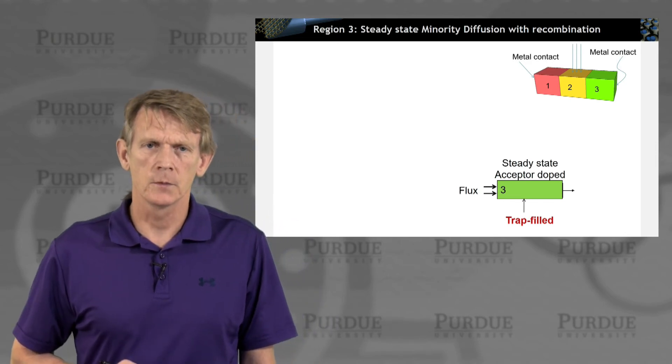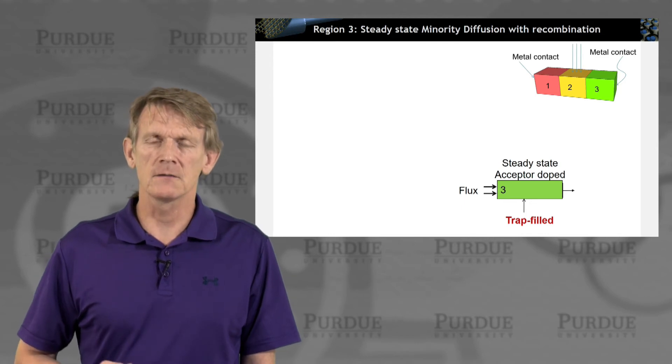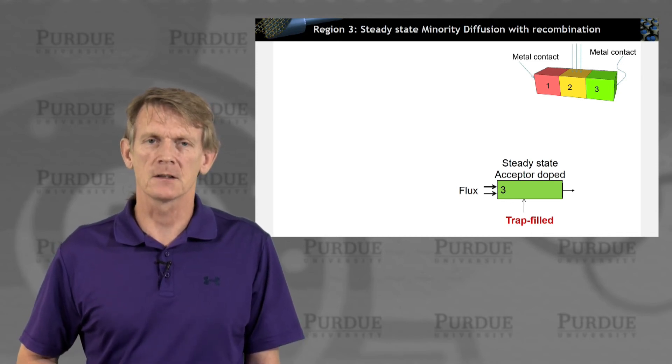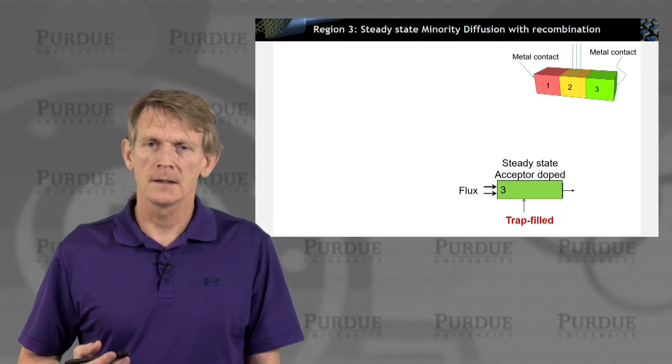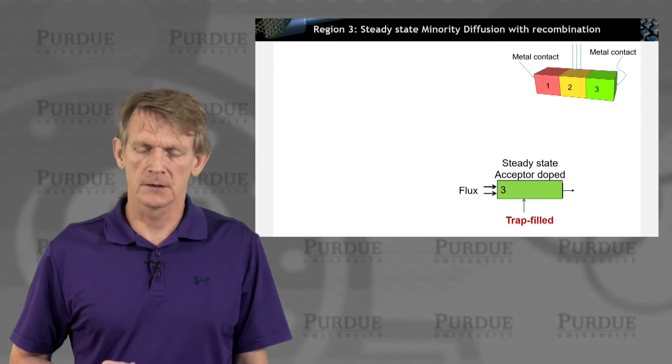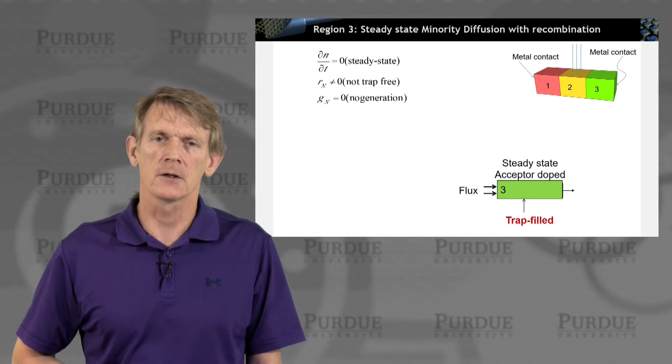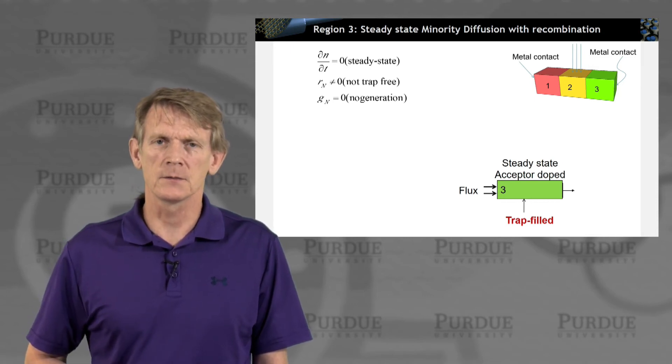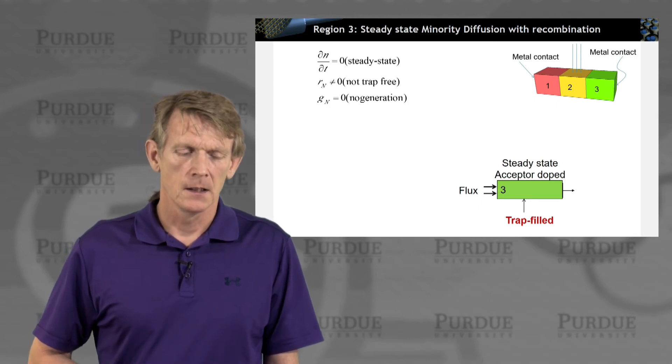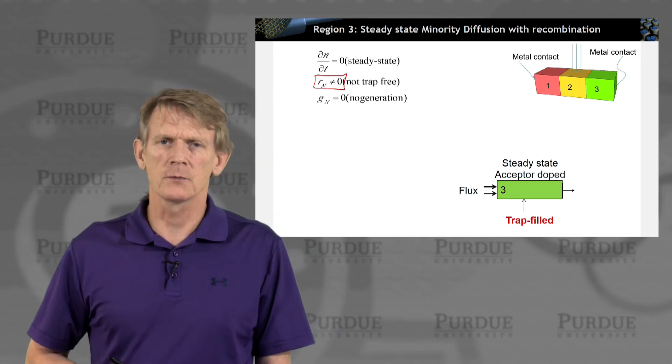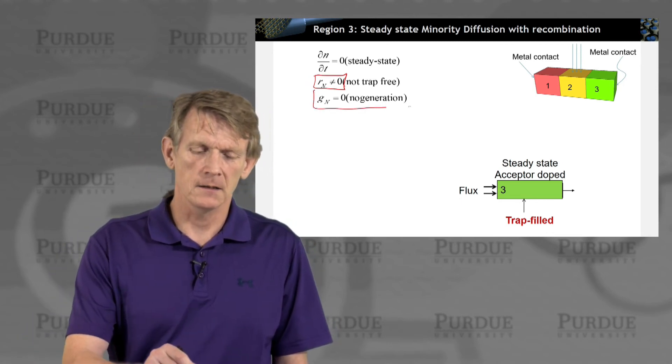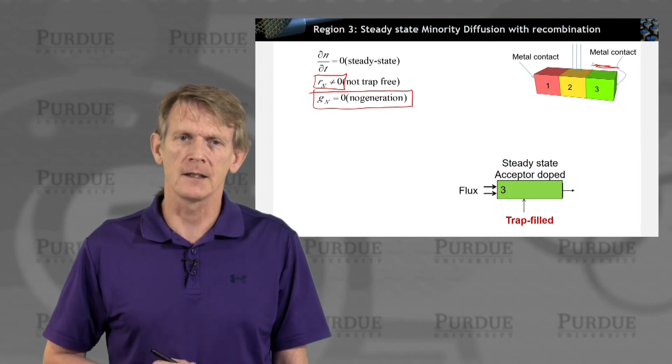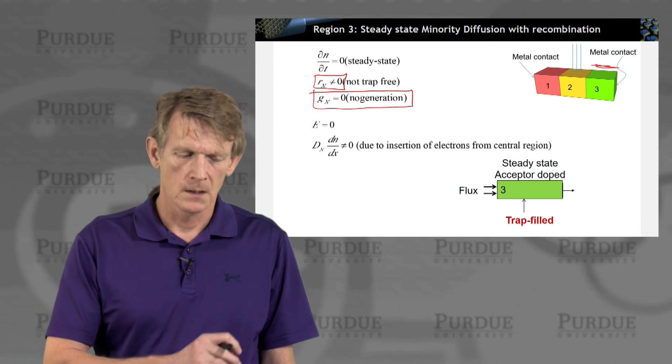Now, let's treat the third segment of this device. We are assuming that this device segment is trap-filled, either from unpassivated surfaces or due to some material that is not quite clean, mid-level traps. And we're looking at steady state. And we're assuming, again, acceptor-doped device region. And we're looking at minority carrier concentration and diffusion. All right. Steady state means the number of electrons in the system doesn't change over time. There is recombination is not zero in this case, because we have a lot of trap, but we are setting explicitly as a model system that we have no generation.